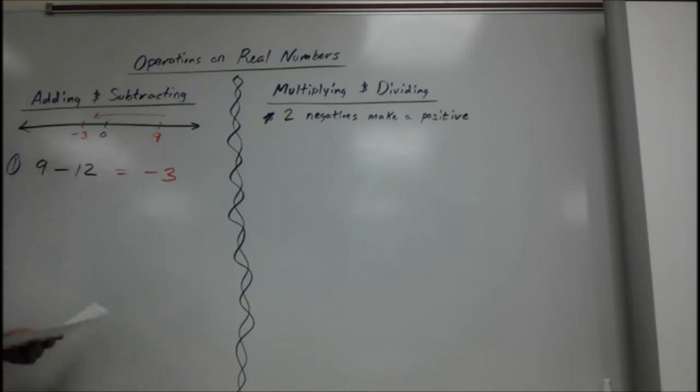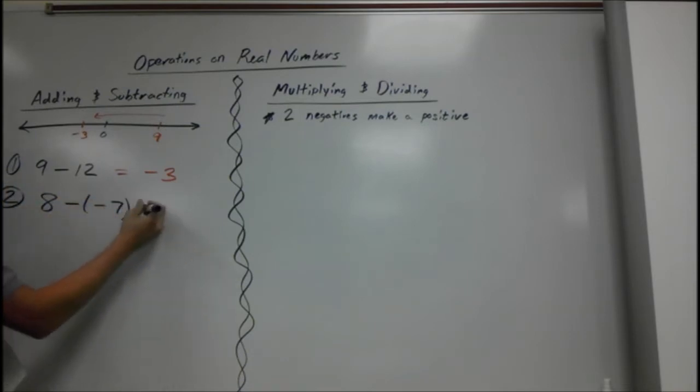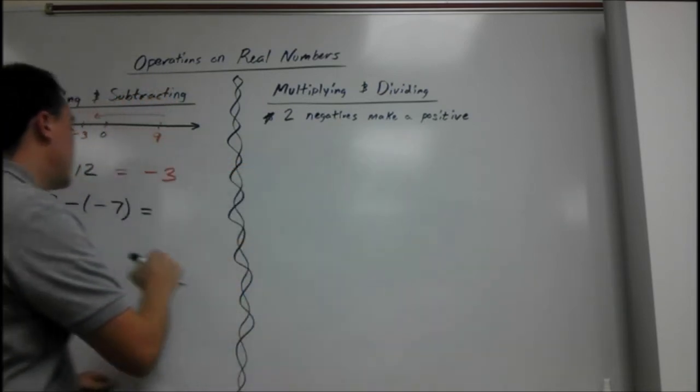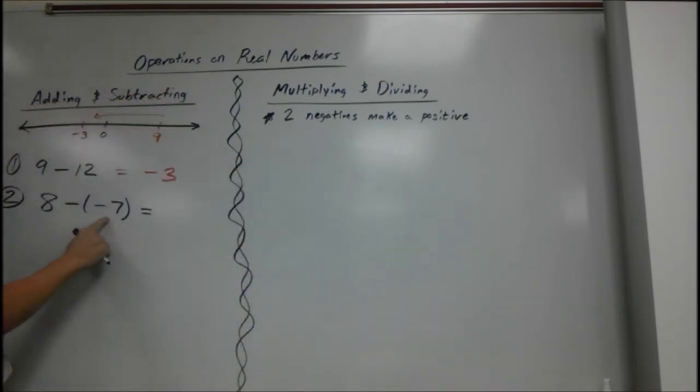Another one. Say we have 2, 8 minus a negative 7. And this is the same rule as here. Two negatives make a positive. So if you have a negative negative, really you can think of that as plus. So we could say 8 plus 7, and we know 8 plus 7 is just 15.